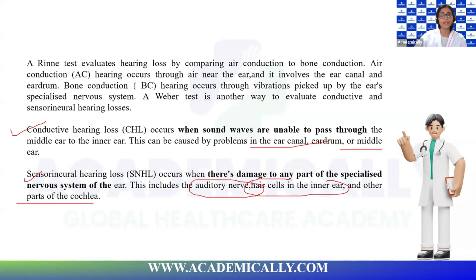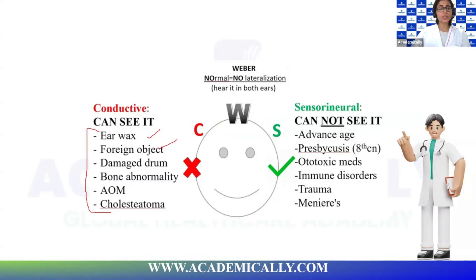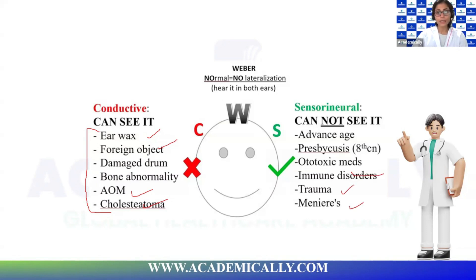Causes of conductive hearing loss include anything obstructing conduction: earwax, a foreign object, damage or perforation of the eardrum, bone abnormality, cholesteatoma, or acute otitis media. Causes of sensorineural hearing loss include advanced age (presbycusis), trauma, Meniere's disease, and ototoxic medications affecting the neural pathway.